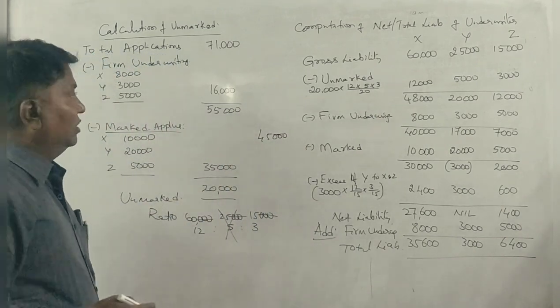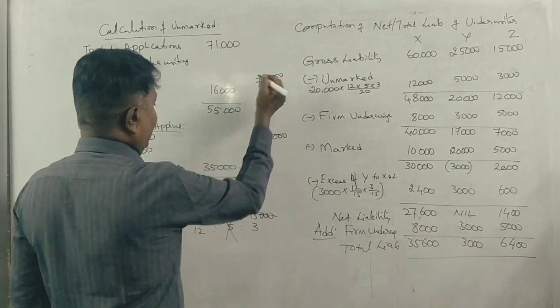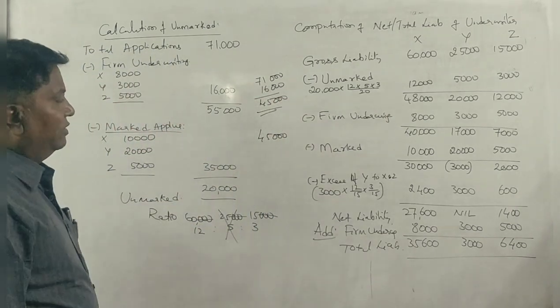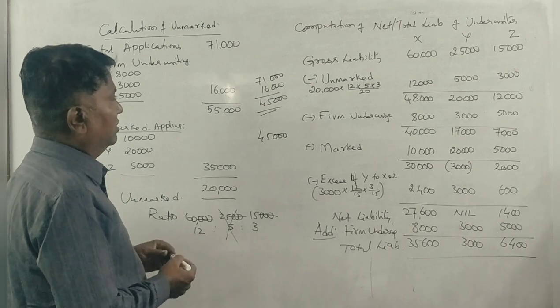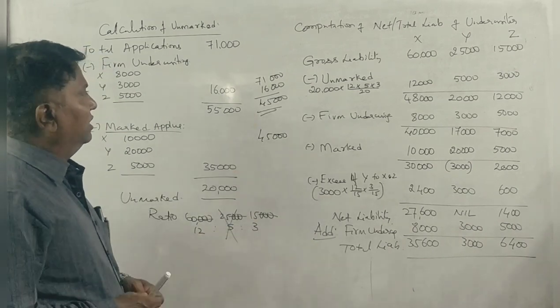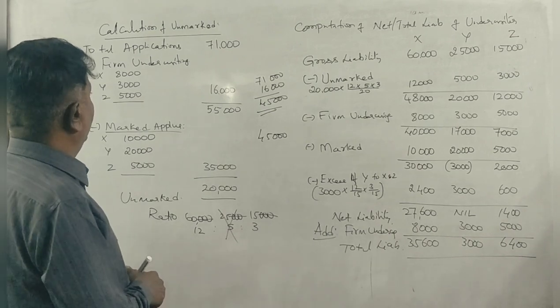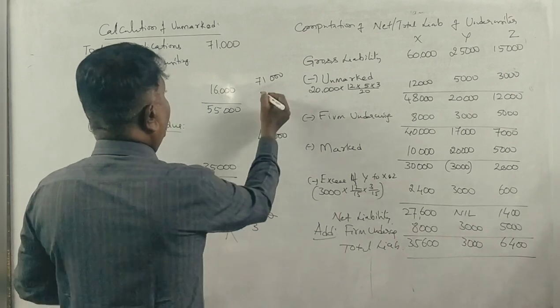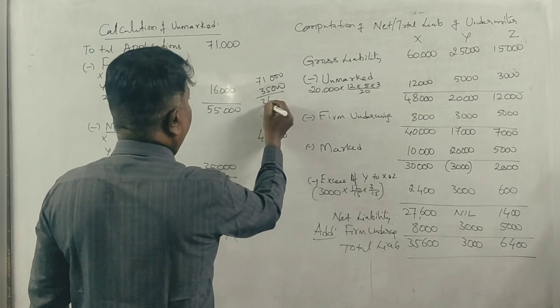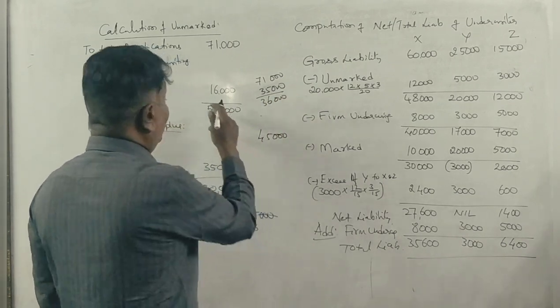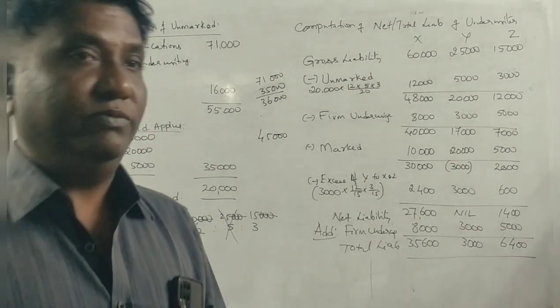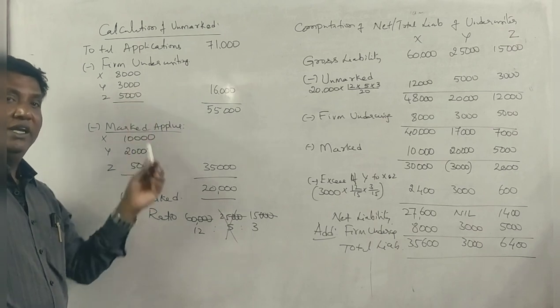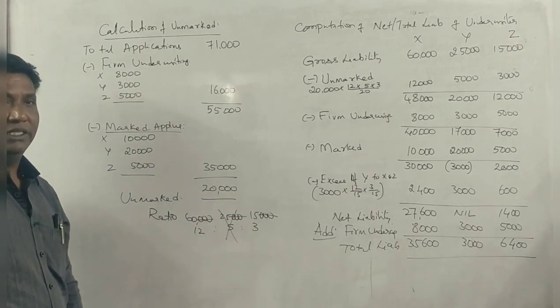71,000, 16,000 minus. Mark the application, including mark. So if you want to include this, that's why we can't do it. Thank you.